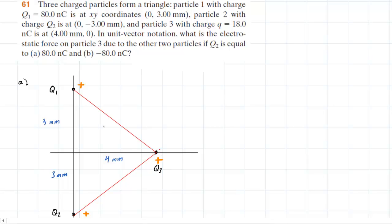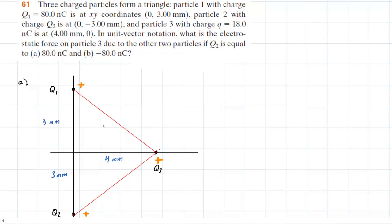In part A of the question, we are told that the particle Q2 has a positive charge on it, so we have indicated that positive sign right there for the charge Q2. We've also drawn the rest of the configuration based on the given information. One thing we will need is the distance from Q1 to Q3, as well as the distance from Q2 to Q3, although we can see that those distances will be the same.